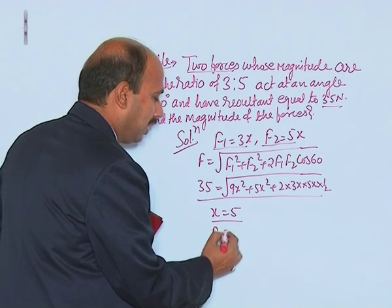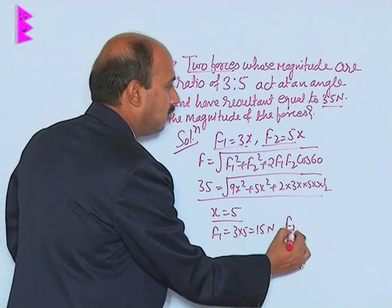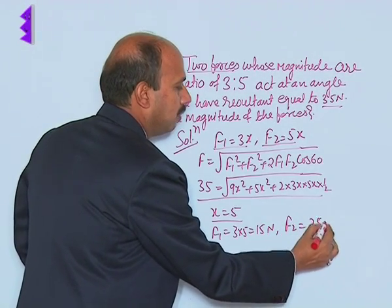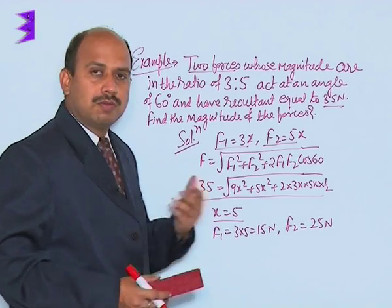F1 you will be getting 3 into 5, that is 15 Newton, and F2 is equal to 5 into 5, that is 25 Newton. So this is just an application of the parallelogram law of vector addition.